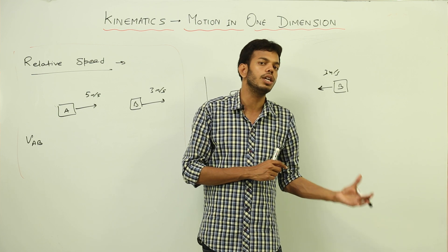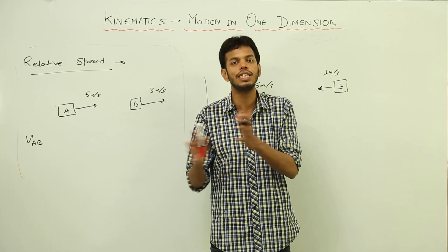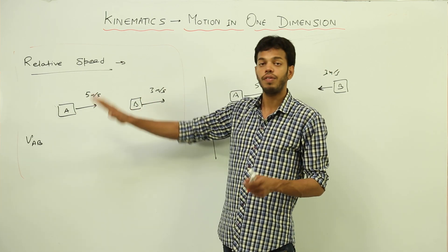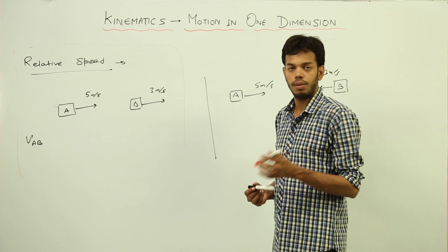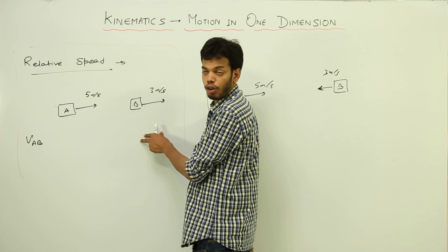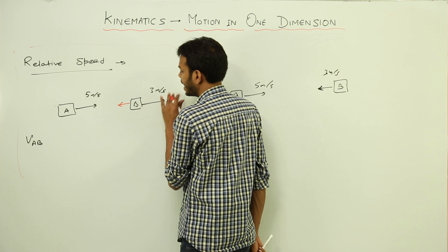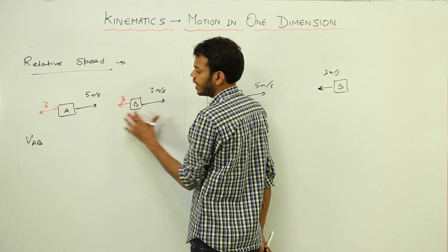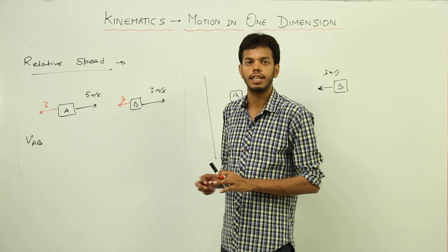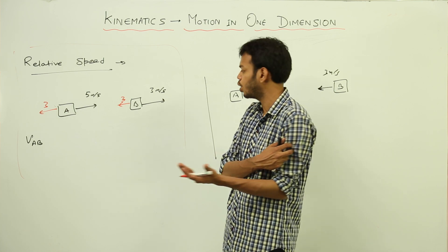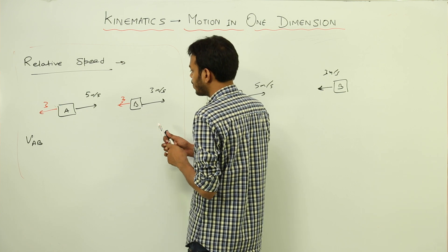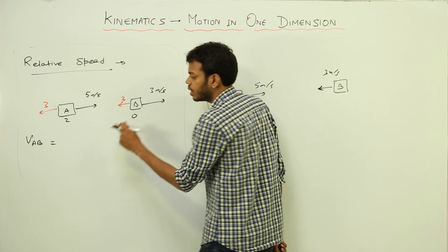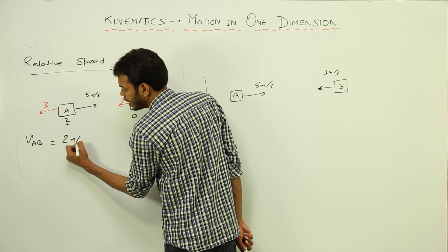To find relative speed, we superimpose the negative velocity of the observer onto the whole system. I apply a negative velocity of 3 — meaning the opposite directional velocity of B — onto both objects. Negative here doesn't mean minus 3 arithmetically; it means applying the opposite direction velocity to both. So B's speed becomes 0 and A's net speed becomes 5 minus 3, which is 2. Therefore, the velocity of A with respect to B is 2 m/s.